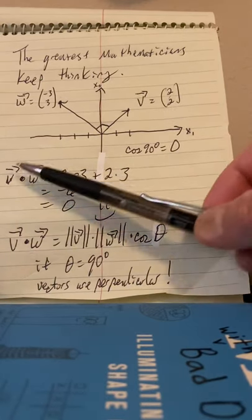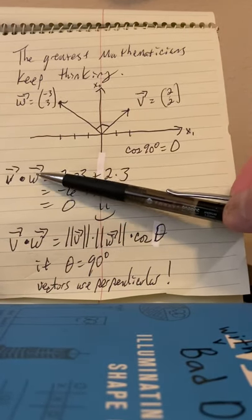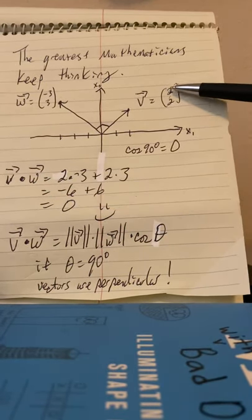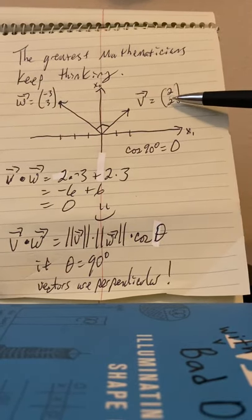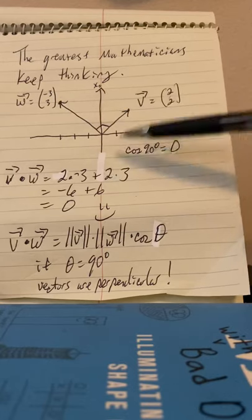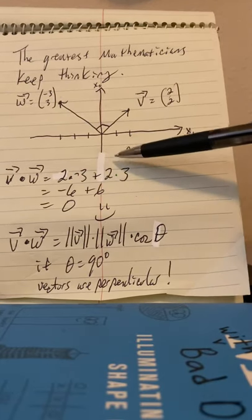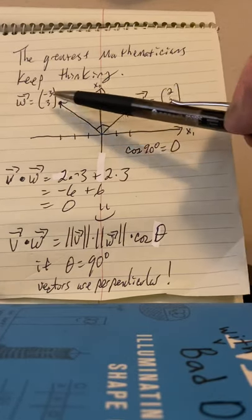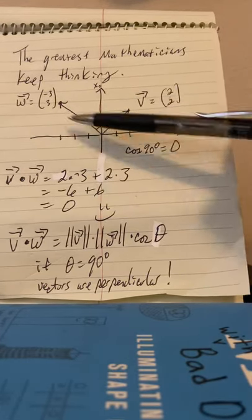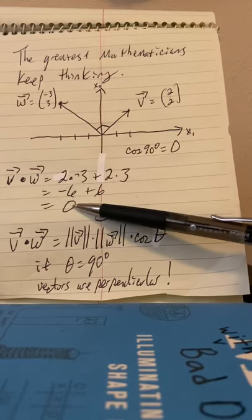Well, let's remember the other definition of the dot product. The other definition of the dot product says if we multiply the first components of the two vectors, multiply the second components of the two vectors, and then add those two products together, you get the dot product. So, like, if I go two times negative three and get negative six, and then two times three and get six, and then add them together, I get zero.